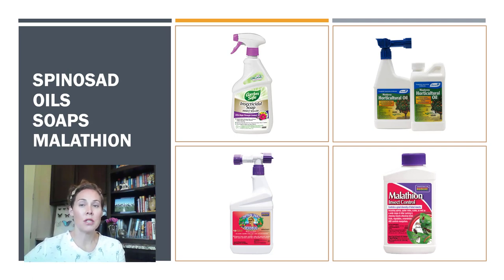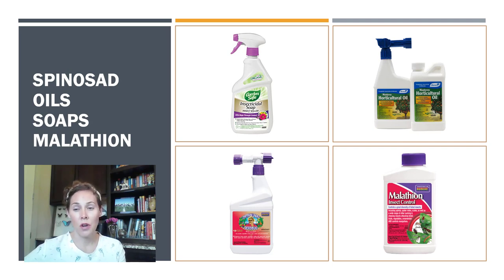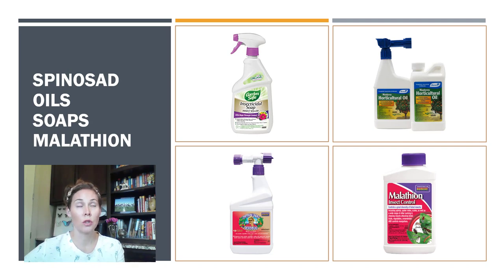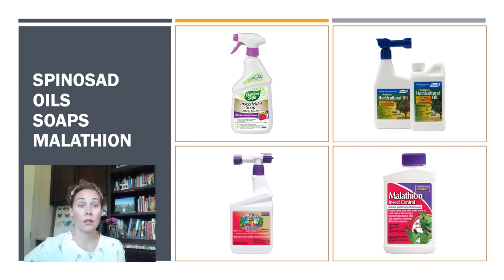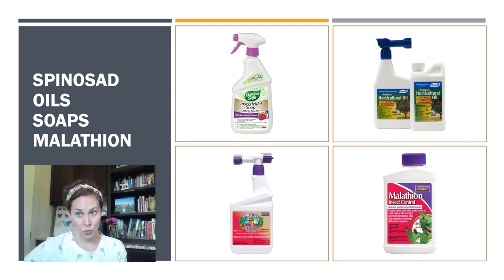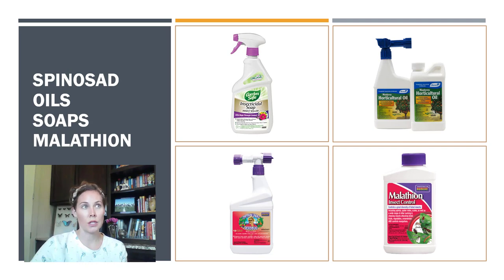To reiterate the options you generally have as a backyard grower: spinosad, oils, insecticidal soaps, and malathion. Oils, spinosad, and insecticidal soaps are organic — they have lower residual, meaning with oils and soaps if you don't actually contact that insect you won't do anything to it, and they don't persist in the environment for a long time. If you have an issue with aphids, mealybugs, and scales, I would recommend treating several times with these products before deciding you have them under control. If you treat just once, you can actually promote increased reproduction and end up with more than you started with.